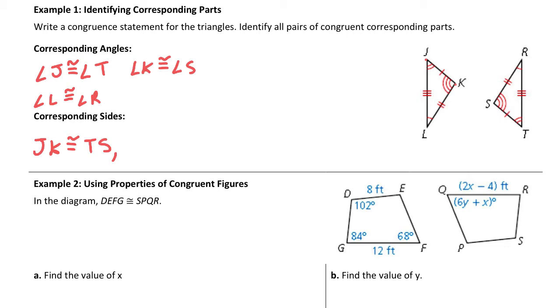For the next one, if I go KL, I would say KL is congruent to SR because they both have that double marking. K is congruent to S, L is congruent to R.